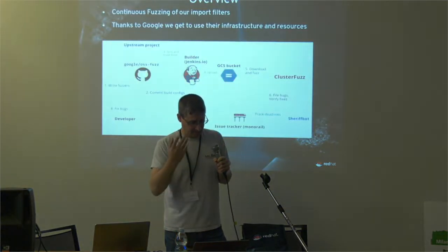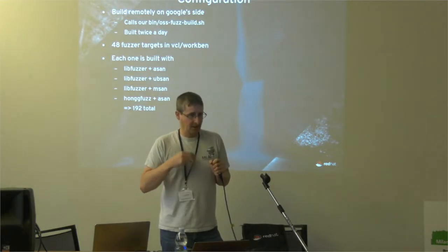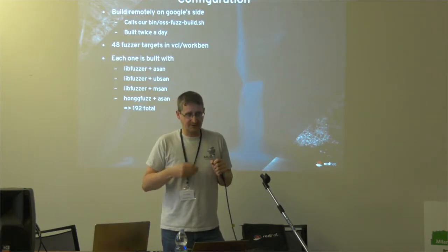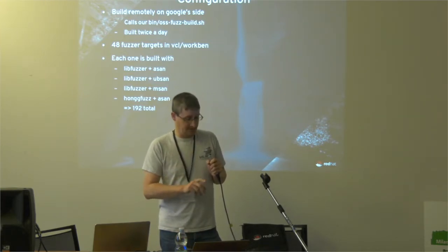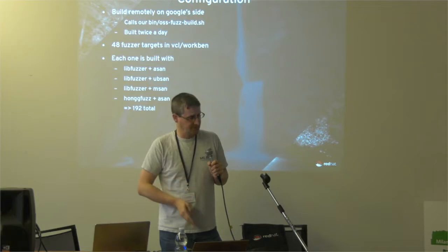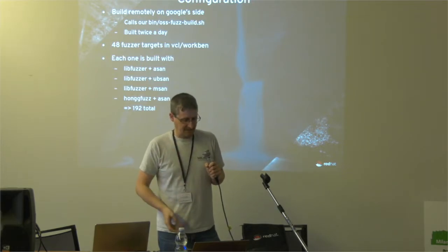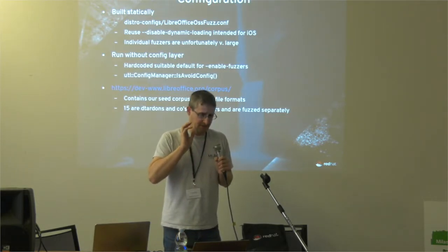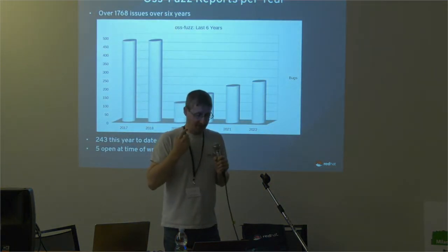OSS Fuzz is what Google provides. What happens there is that it's built remotely on Google's site. We have a whole bunch of fuzzers where we import a whole different bunch of file formats, and it finds crashes, records crashes, and categorizes them into security-relevant crashes and non-security crashes. We have 48 targets in that directory, from GIF to DOC to ODT. They're built with four different combinations of fuzzers: address sanitizers, undefined behavior sanitizers, memory sanitizers, and different engines that run them. This is a chart of the reports we've had for the last couple of years.